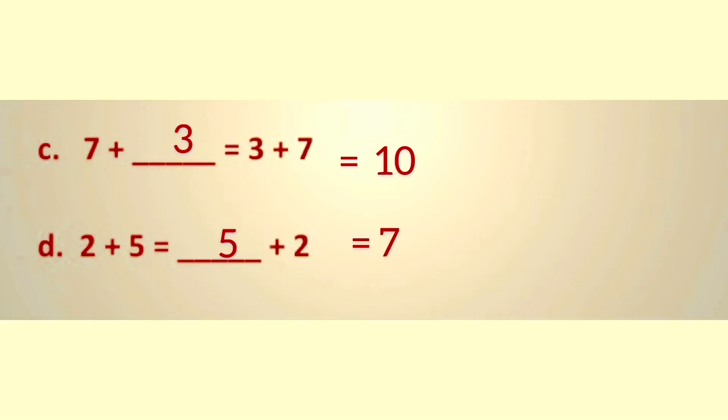Now we go to the next question. The next question is two plus five equals dash plus two. Here, on the left side, the answer is already there: two plus five. So what will be the answer? Five plus two. Let us check the sum on both sides.